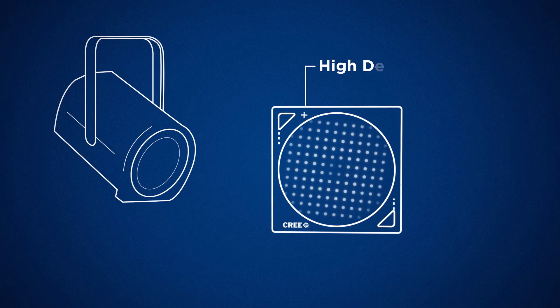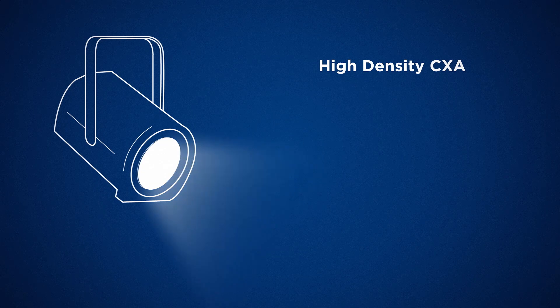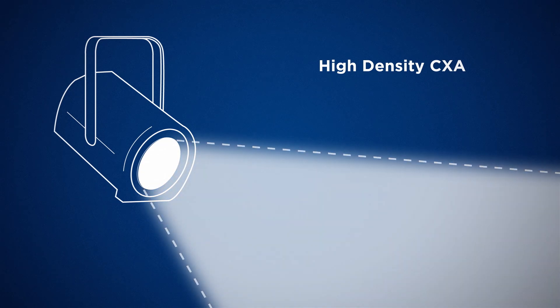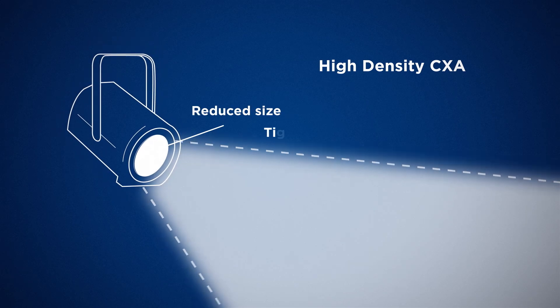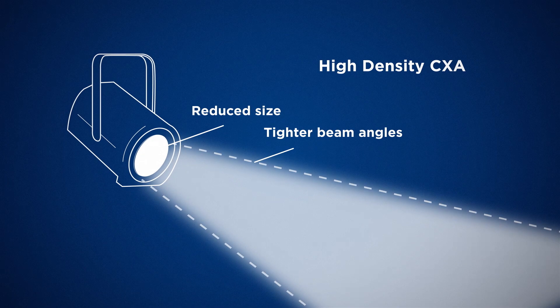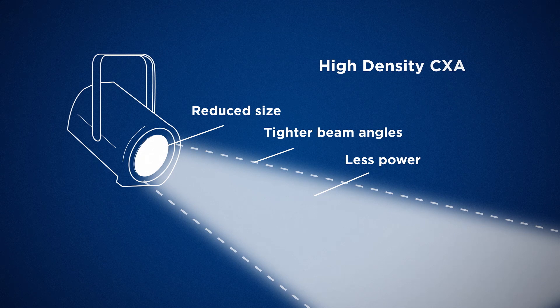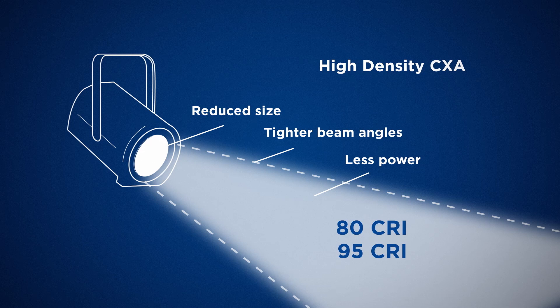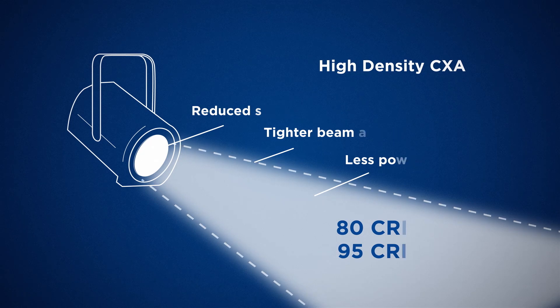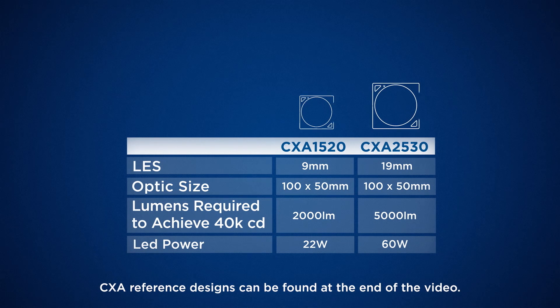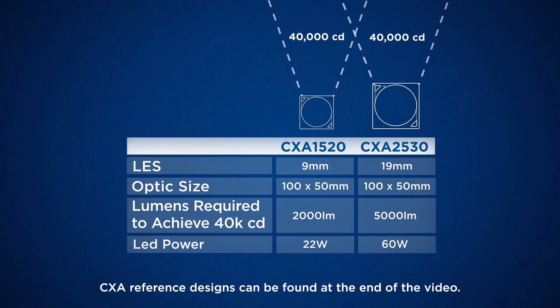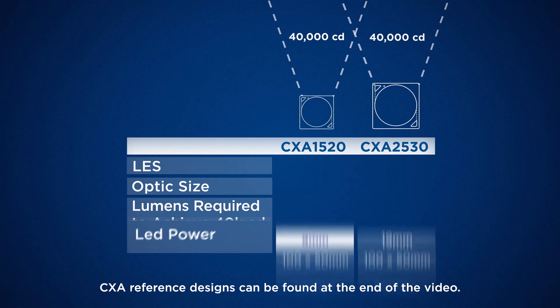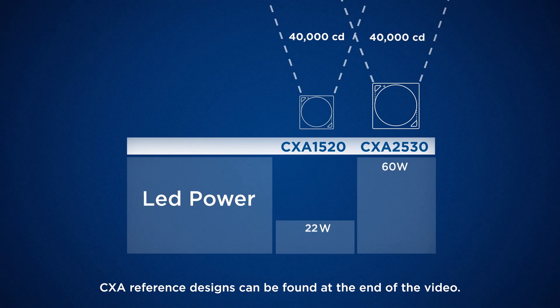Let's focus on high density arrays for a moment. High density CXAs redefine performance for LED spotlights with significantly reduced size and tighter beam angles. HD arrays use less power for the same quality light, coming in 80 and 95 CRI options. For instance, the high density CXA1520 can give you the same candela power as the standard density CXA2530, but from a much smaller light source and using 66% less energy.